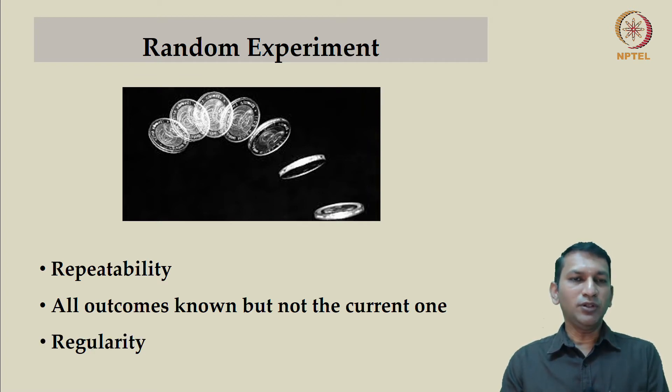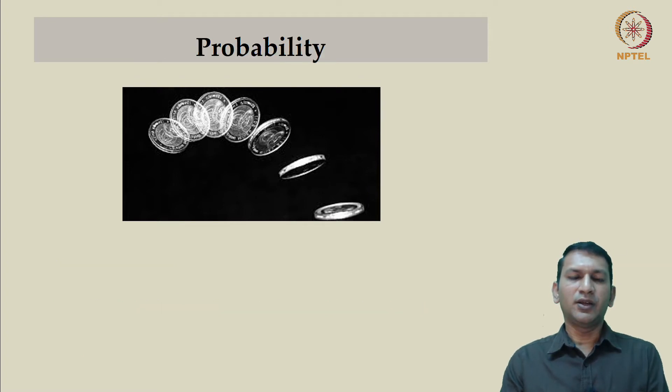Finally, we should also ensure the experiment possesses regularity or statistical regularity. That means after a few trials, large enough trials, a pattern should emerge. Now, what is probability? Let us consider the basic coin toss experiment, which as we know can be qualified as a random experiment.